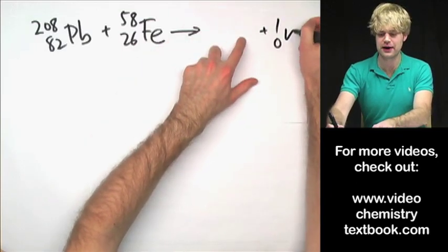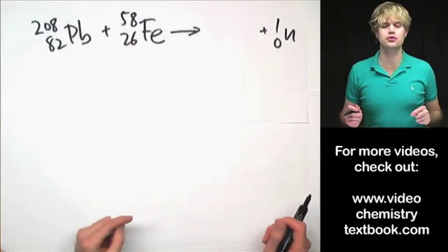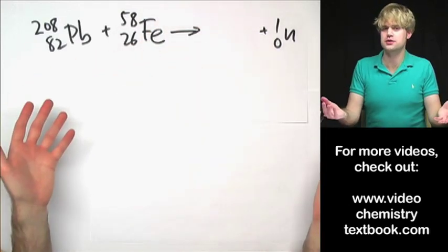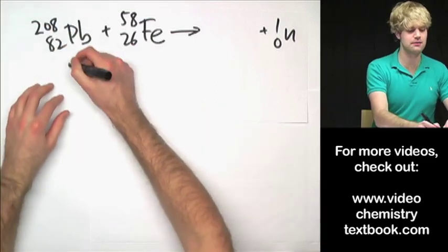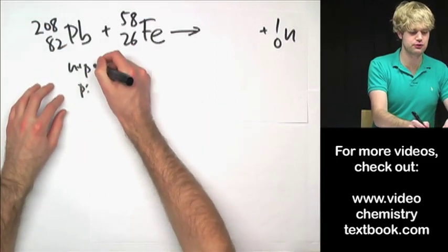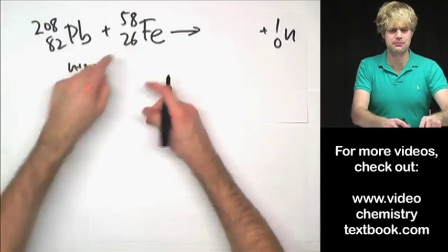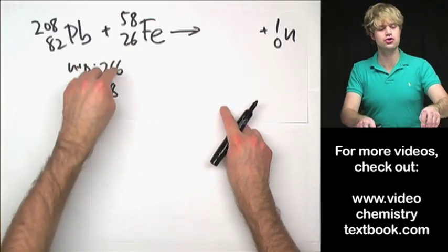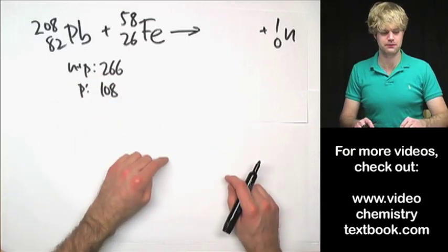Well, one thing that we're going to get is we're going to get a neutron shooting out. In order to figure this out, just like we did with these other nuclear problems, we add the number of neutrons and protons on both sides.